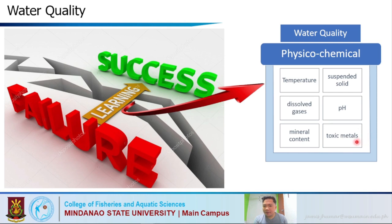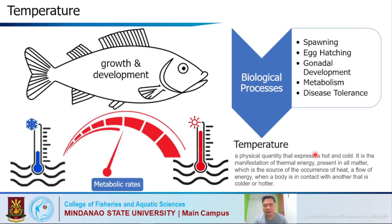The success and failure of hatchery operations depends upon knowledge of the water quality, mostly the physical-chemical properties of the water going into your hatchery facility. Temperature is a vital component — no single factor affects the development and growth of fish as much as water temperature. The biological processes affected by temperature include spawning, egg hatching, larval development, metabolism, and disease tolerance.